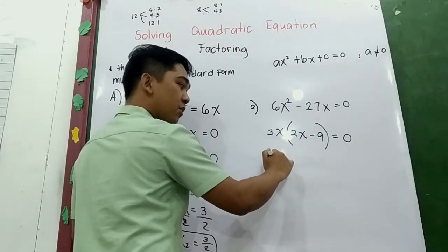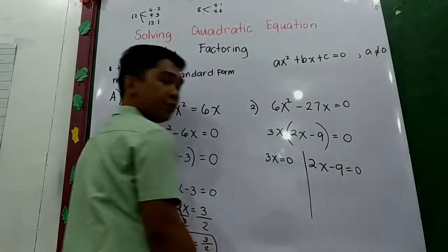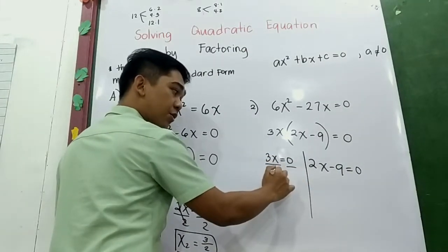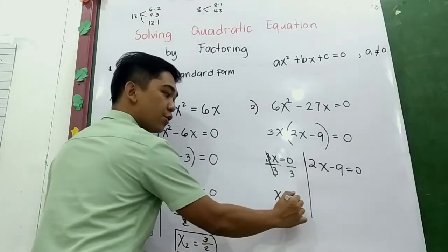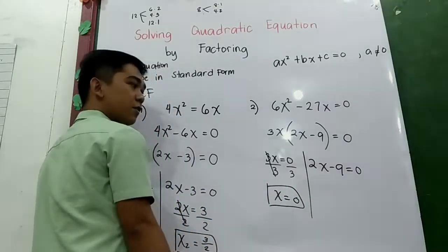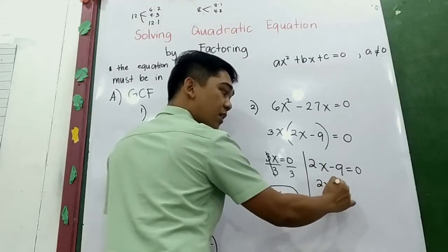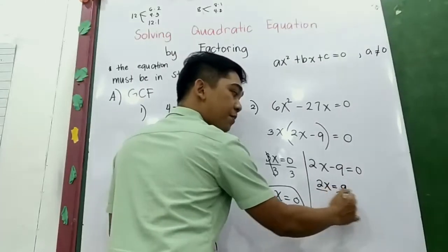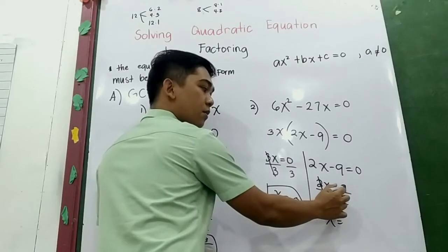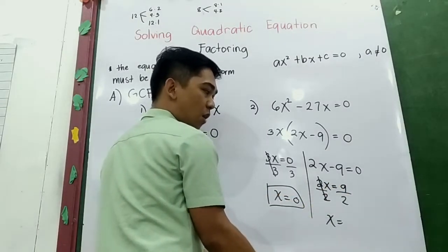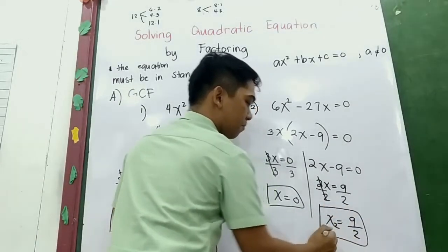Equate to zero: 3x = 0, so x₁ = 0 divided by 3, which is 0. For the other factor, 2x − 9 = 0. Transpose −9 to get positive 9, then divide by 2, so x₂ = 9/2. That is the Greatest Common Factor technique.